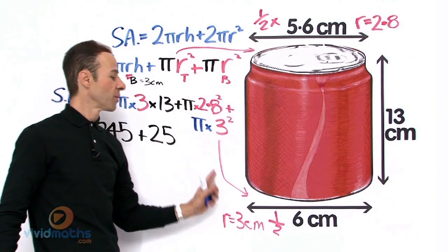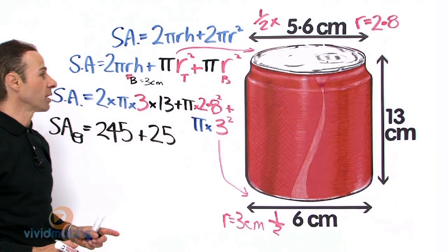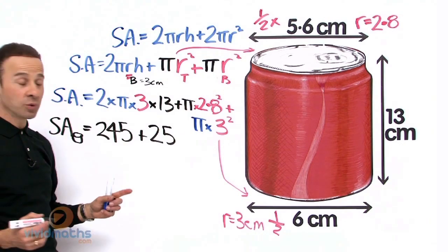And down here we have the bottom circle area down there. That is π times 3 squared, and that is going to give us a value rounded up to 28.